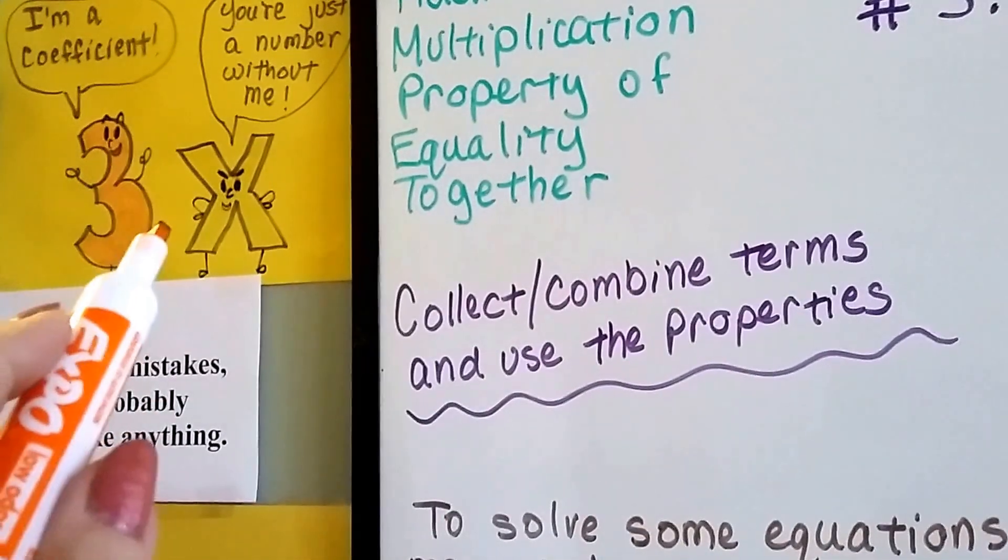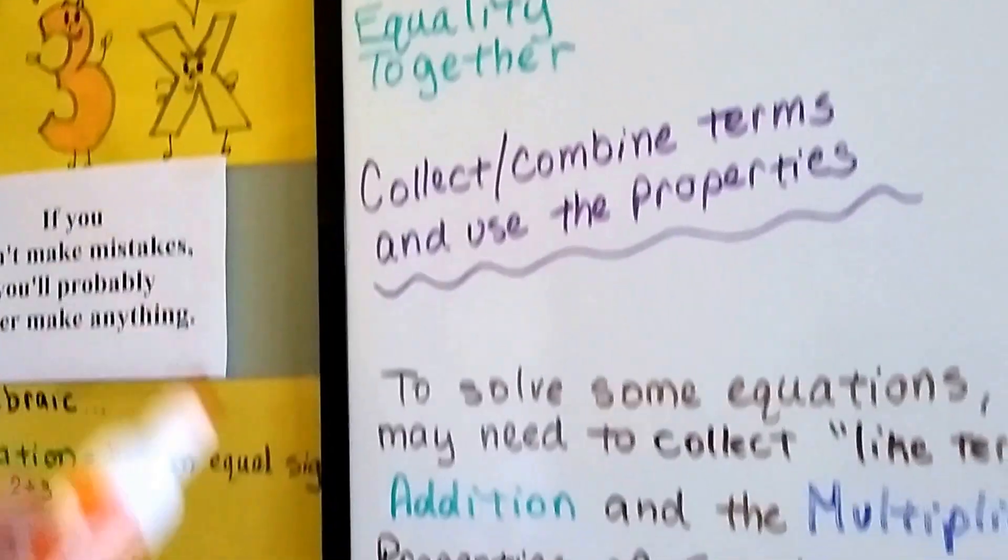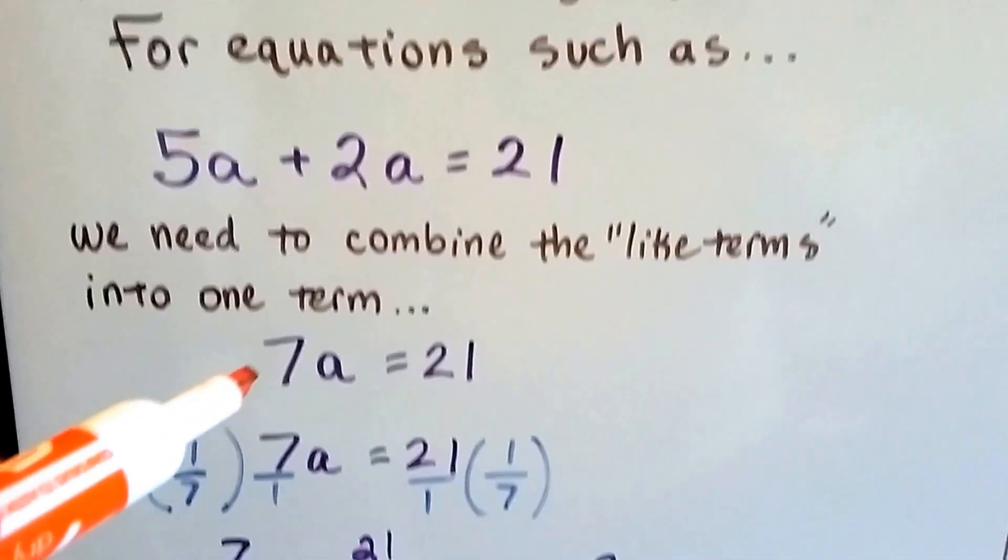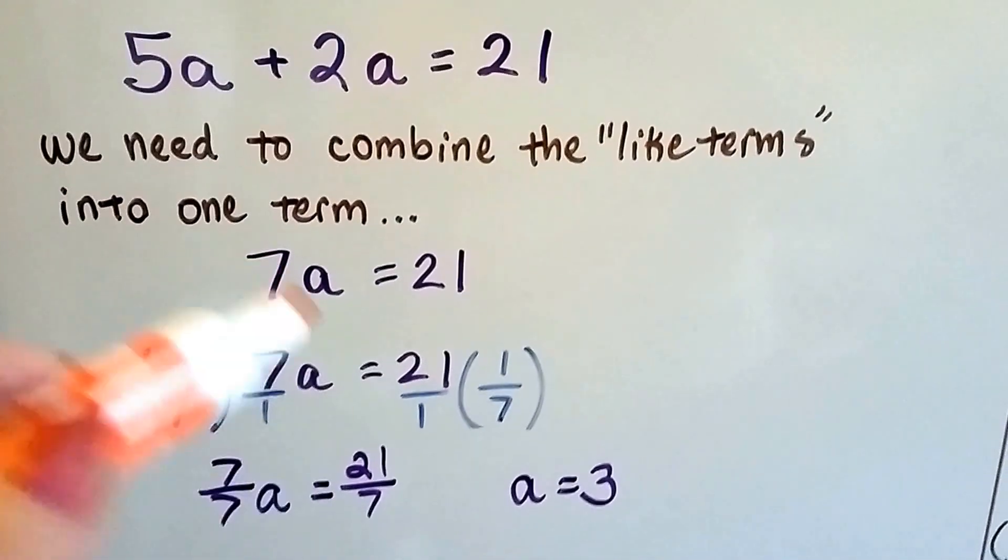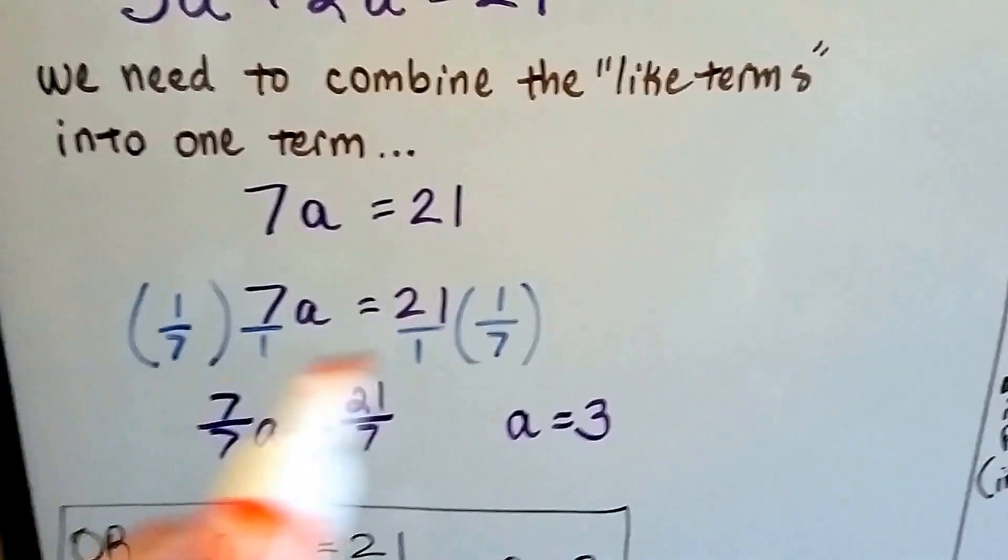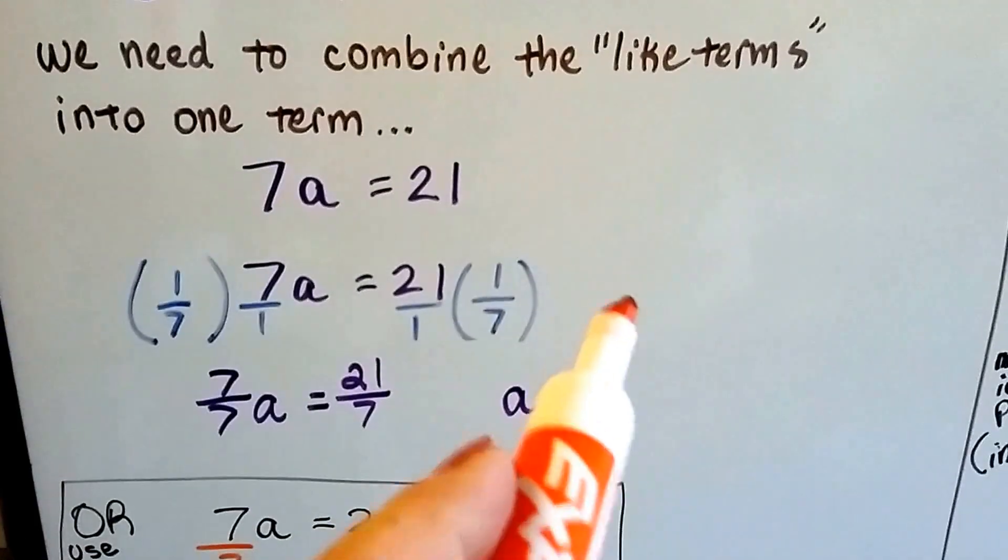So the reciprocal would be the upside down version. A 7 could be written as 7 over 1, so its reciprocal would be 1 seventh. I'm going to multiply both sides by that 1 seventh.